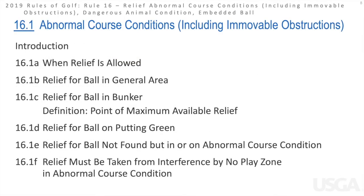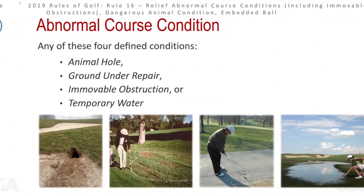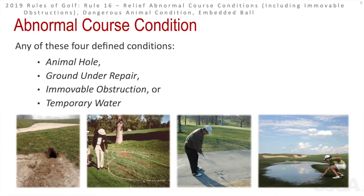We'll go through sections 16.1 A through F and work through definitions and relief options in each. The definition of an abnormal course condition includes any of these four conditions: animal holes, ground under repair which is usually marked by the committee in charge of the competition, immovable obstructions, or temporary water.